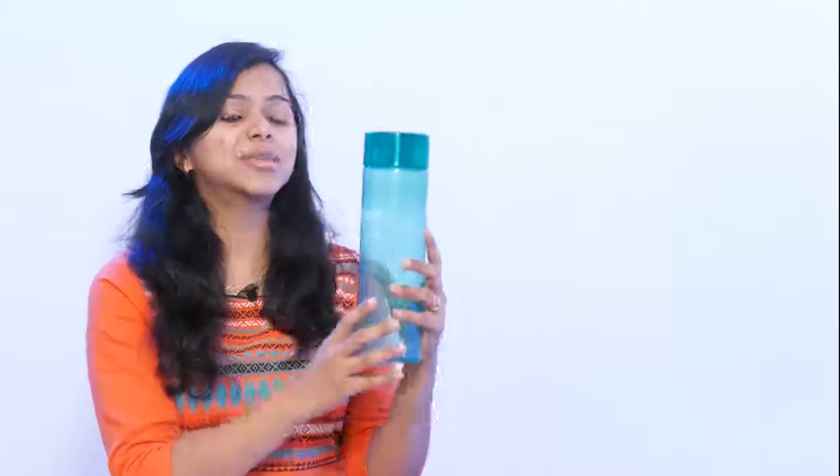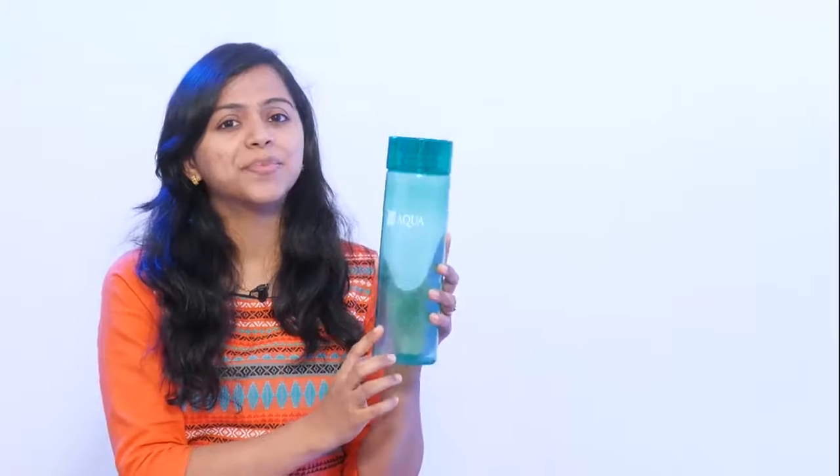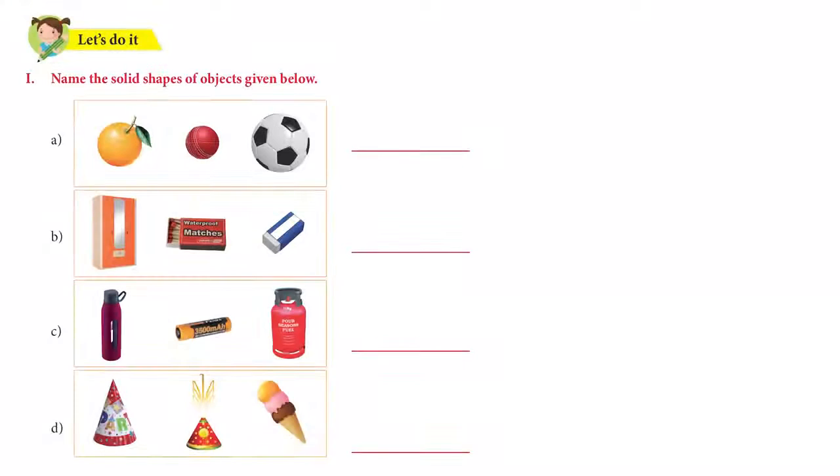How about we try this one. What is this? This is a cylinder. And now I have one last one — what shape is this ball? Is this a sphere? Very good. So you learnt about solid shapes. Let's try and see if you can look at the activity that's given in the book and solve them.